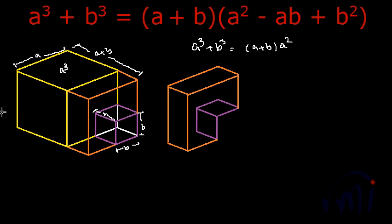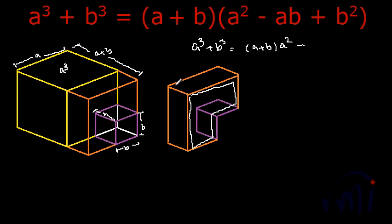So we have to subtract this much volume. This L-shaped solid has a face which is L-shaped, and it has a thickness equal to B.